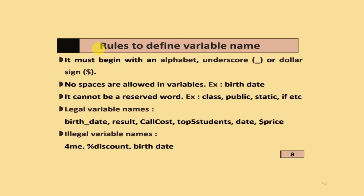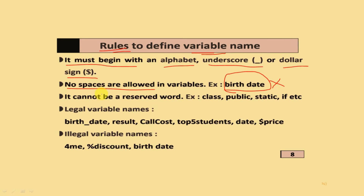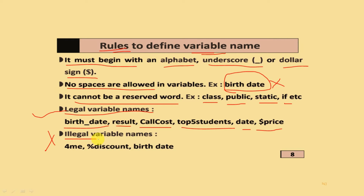You must strictly follow different rules to define a variable name. It must begin with an alphabet, underscore, or dollar sign. No spaces are allowed in a variable name. It cannot be a reserved word like class, public, static, if, else, or other words used by Java itself. Legal variable names include: birth_date, result, callCost, top5students, date, $price. Illegal variable names include: 4ME, %discount, and birth date (with a space).